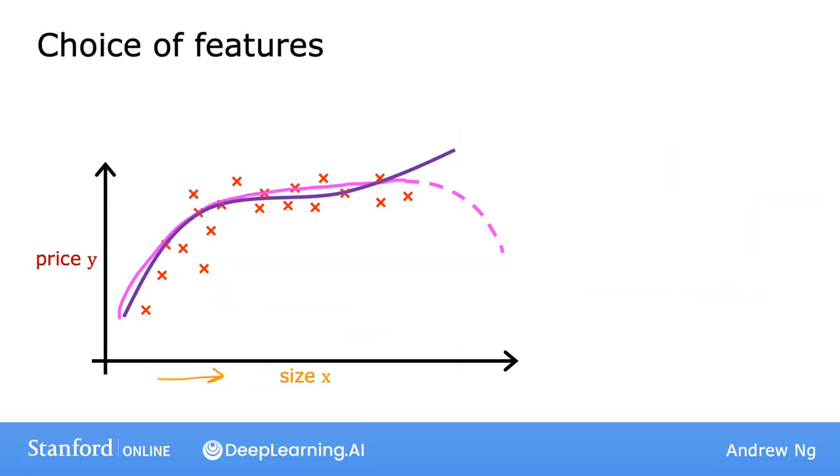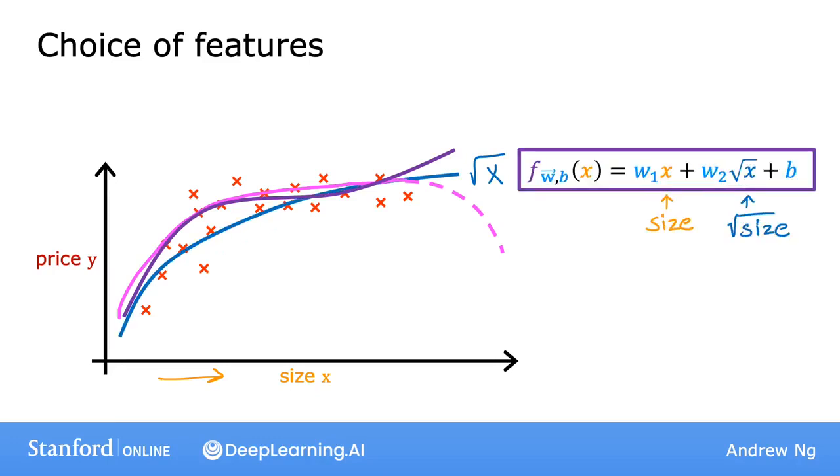Finally, here's one last example of how you really have a wide range of choices of features to use. Another reasonable alternative to taking the size squared and size cubed is to use the square root of x. So your model may look like w1 times x plus w2 times the square root of x plus b. The square root function looks like this and it becomes a bit less steep as x increases, but it doesn't ever completely flatten out and it certainly never comes back down.